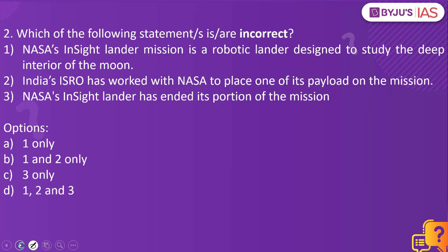Now let's look into the next practice question. Which of the following statements is incorrect? NASA's InSight Lander mission is a robotic lander designed to study the deep interior of the Moon. India's ISRO has worked with NASA to place one of its payloads on the mission. NASA's InSight Lander has ended its portion of the mission. Which of the statements given here are incorrect? The answer to this is 1 and 2 only.